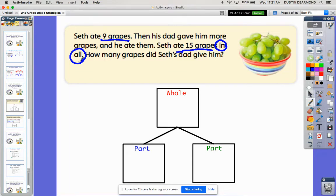Then his dad gave him some more. Picture his dad coming over, giving him a few more grapes, and he ate them. So he had the nine grapes, he ate the grapes that his dad now gave him. Seth ate 15 grapes in all. So that's our total. What we're trying to figure out is what's missing - that's what his dad gave him.